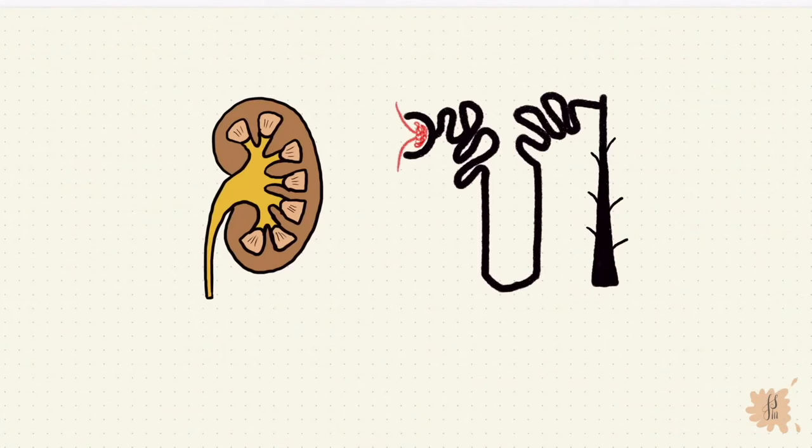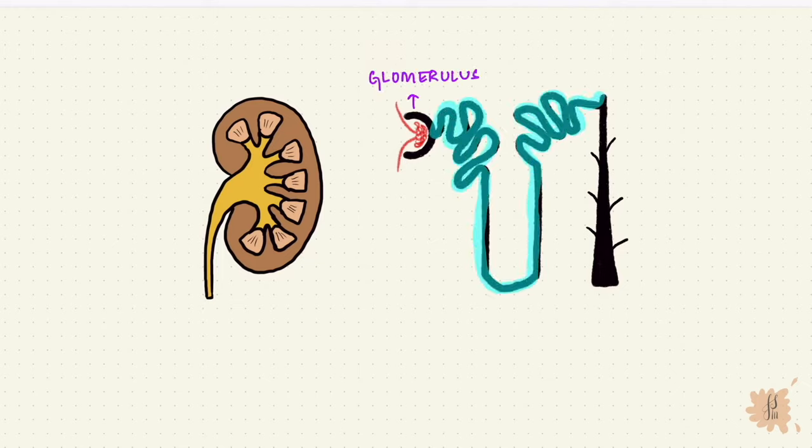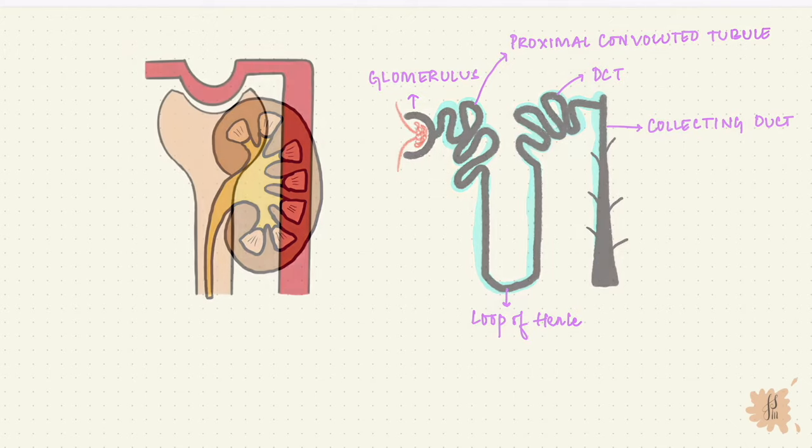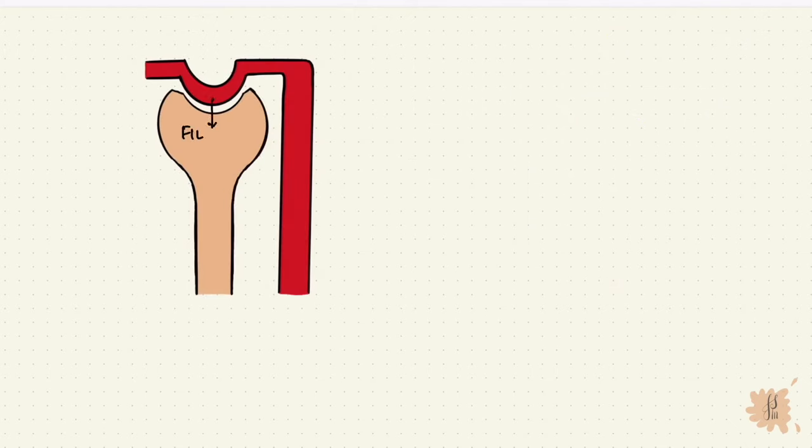The kidney has millions of nephrons and each nephron has a glomerulus and a renal tubule. The first part of the renal tubule is the proximal convoluted tubule, which then leads into the loop of Henle, the distal convoluted tubule, and finally the collecting duct. The renal plasma gets filtered through the glomerulus. The water and solutes that pass into the tubule can then get reabsorbed or secreted or neither and just get excreted.